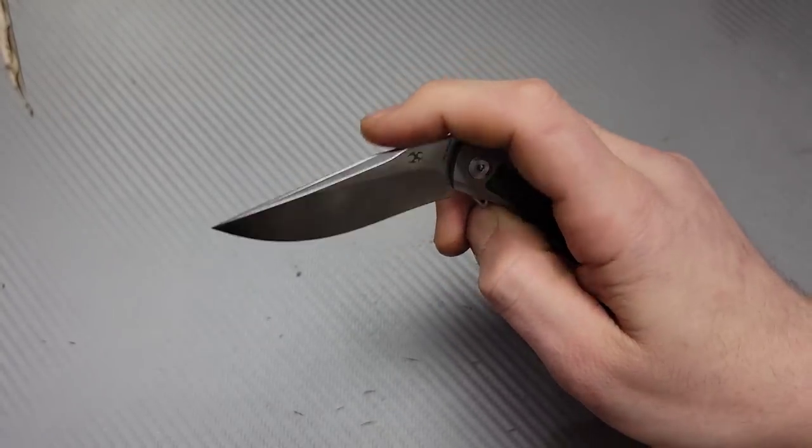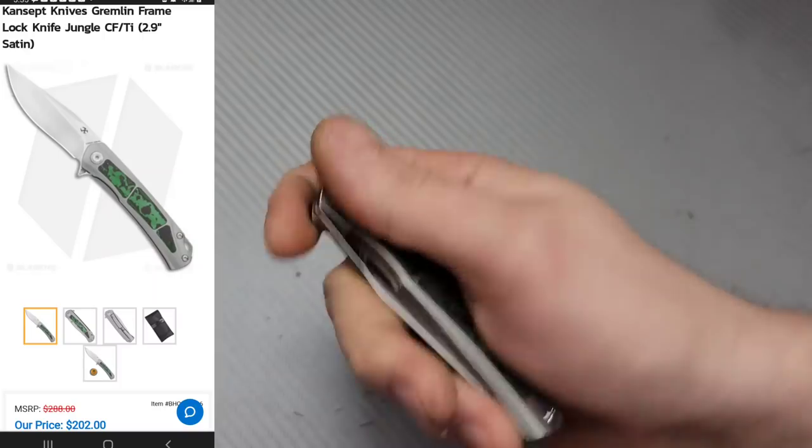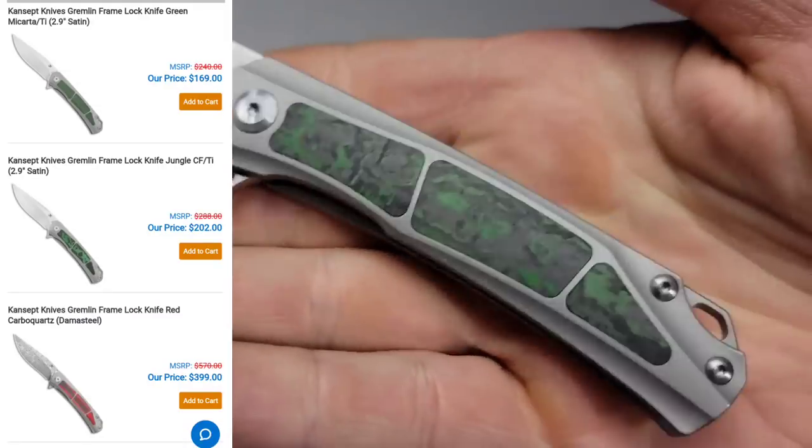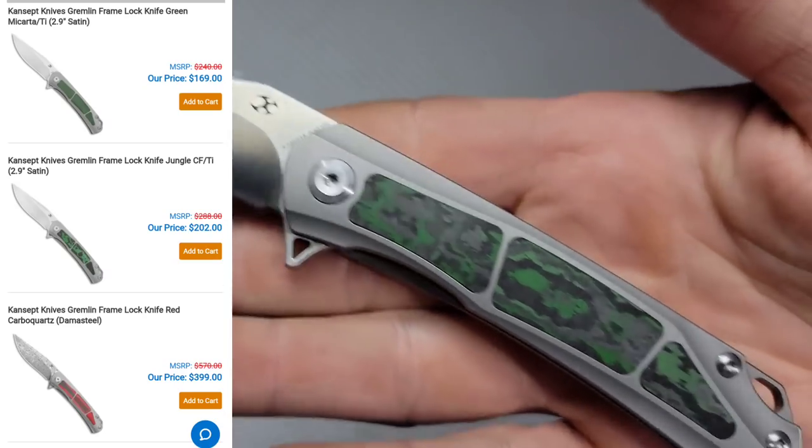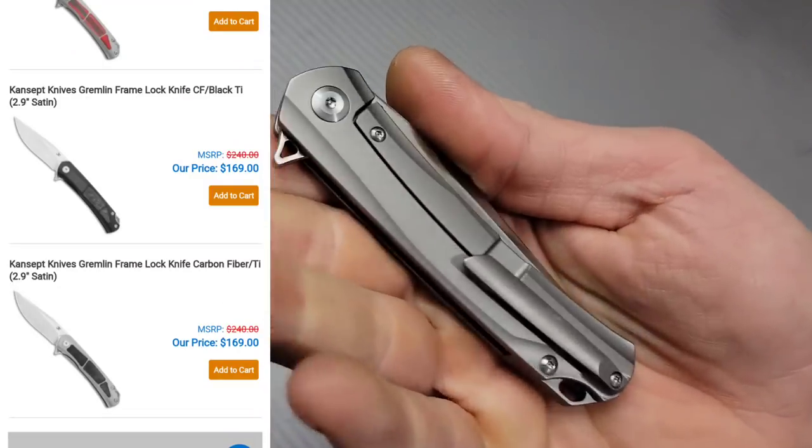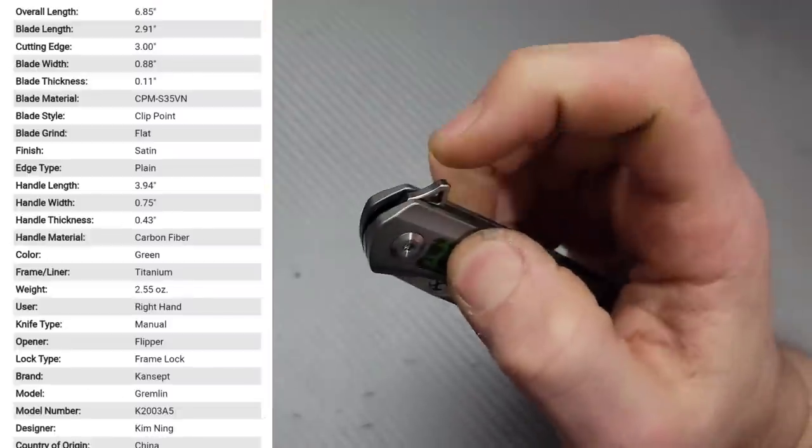This is the Concept Gremlin. An extremely smooth EDC knife with fat carbon inlays. The blade steel is S35VN and the flipping action is really good on this.